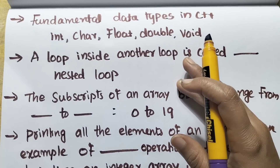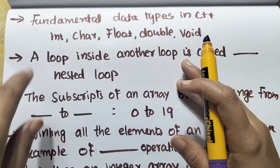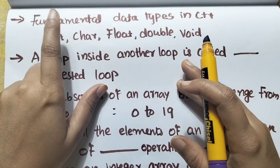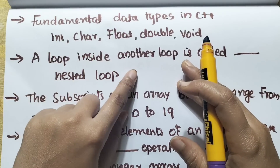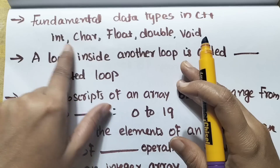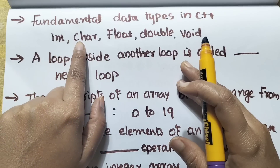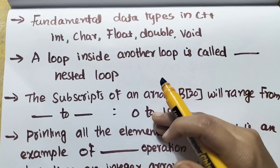The fundamental data types in C++ — this is a two-mark question. List out the fundamental data types: char, float, double, and void.